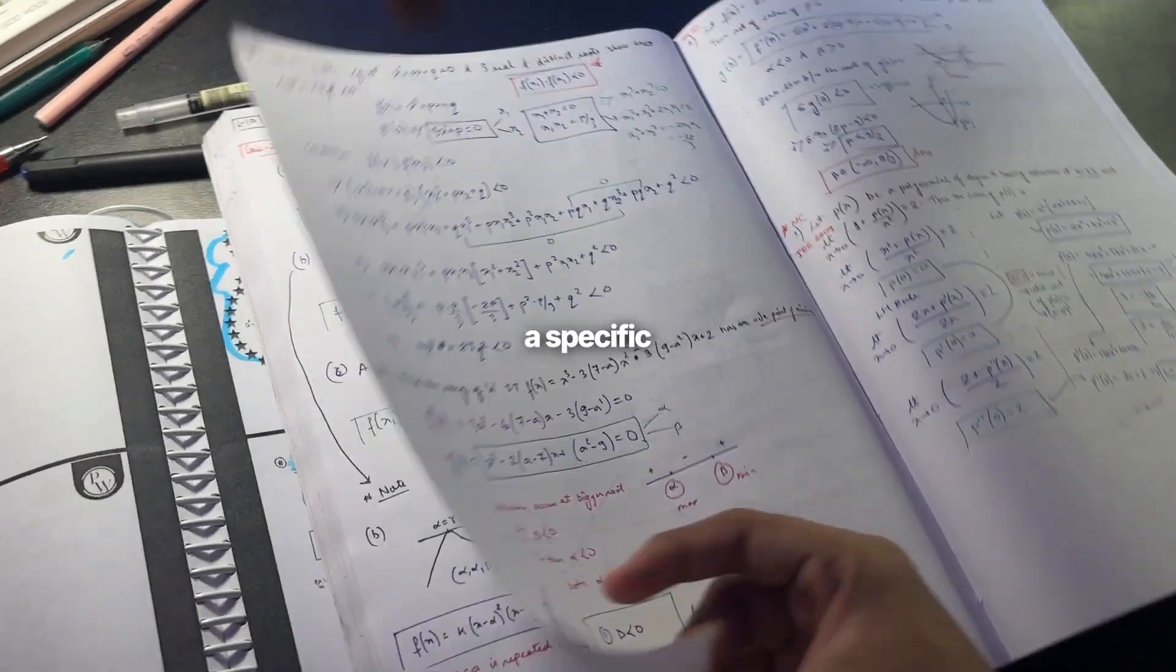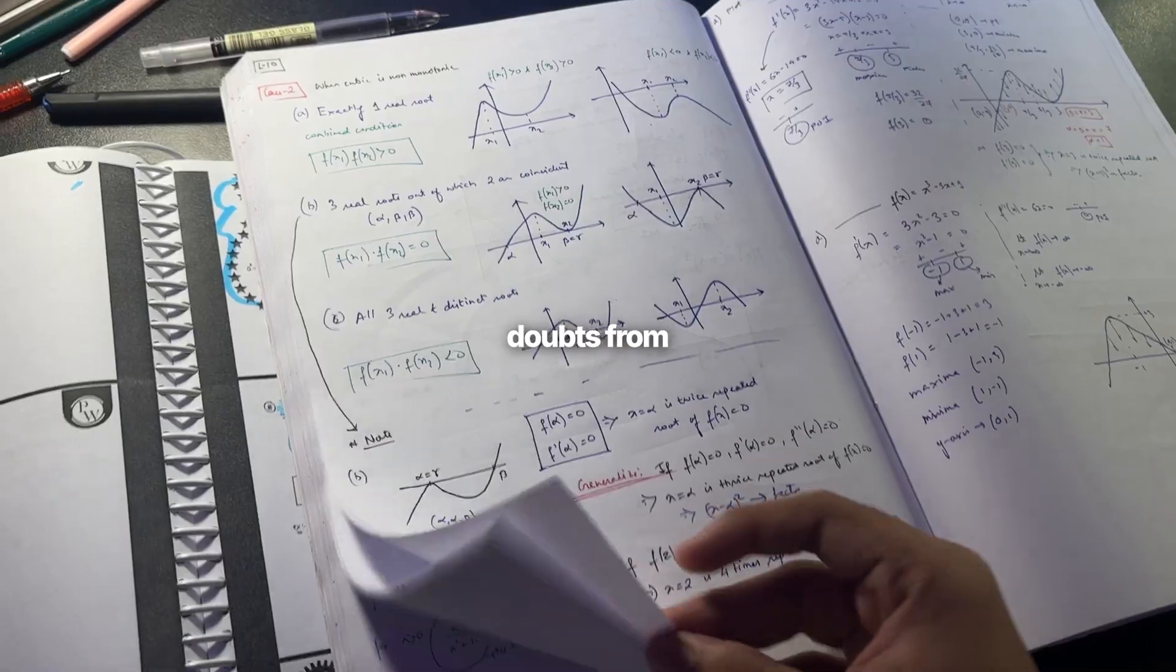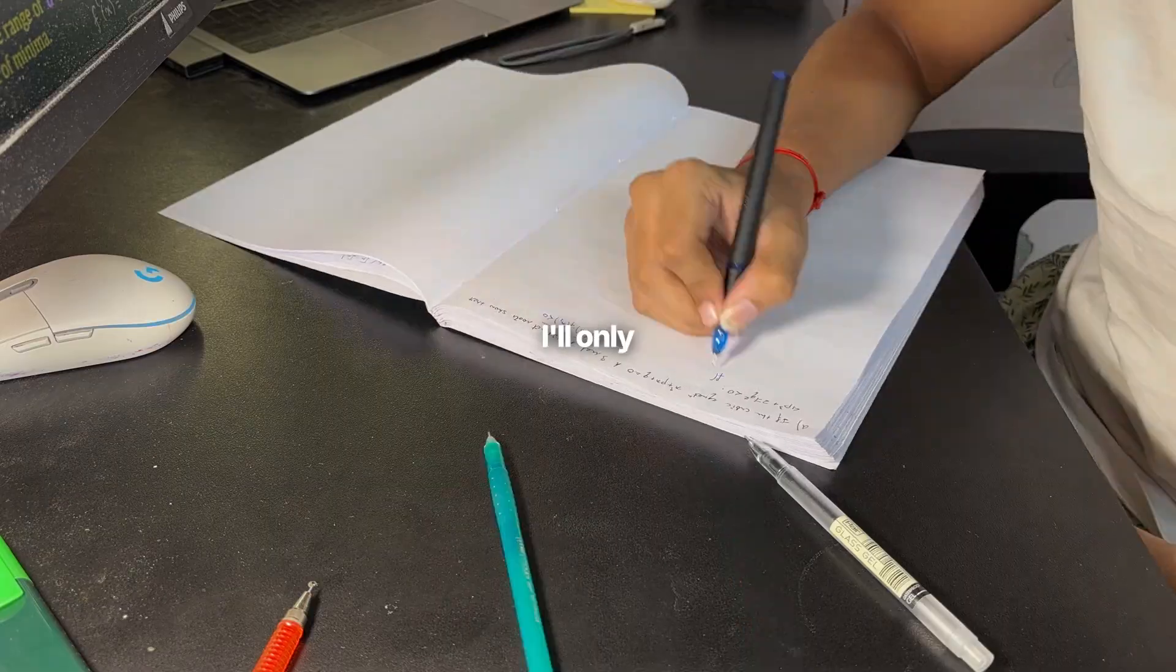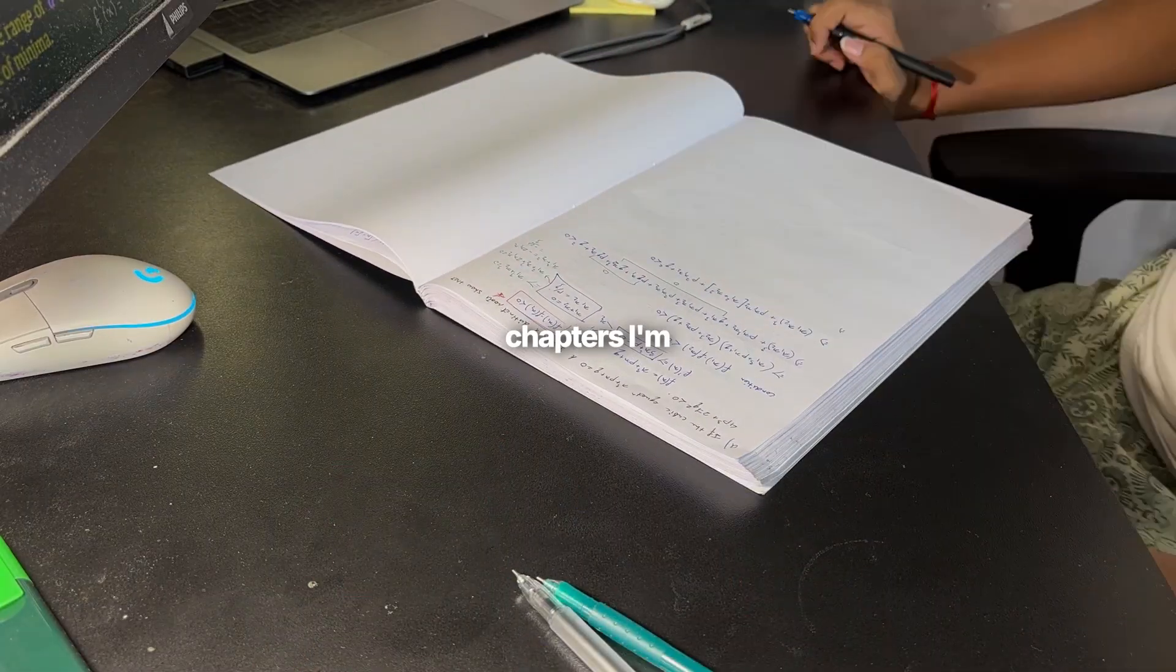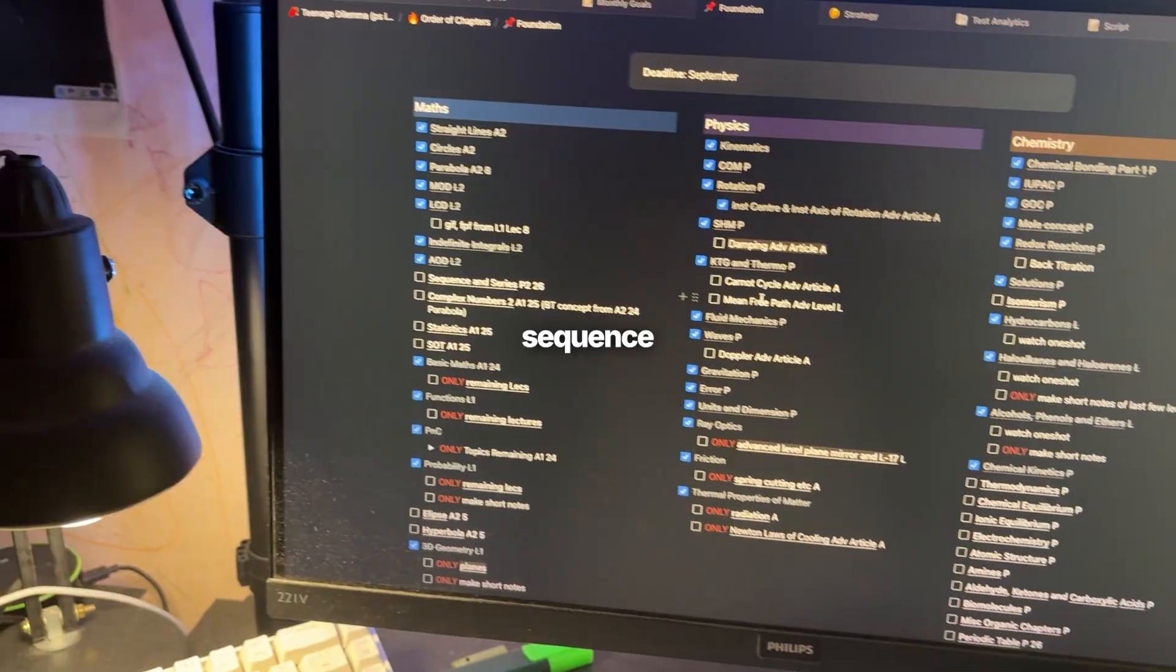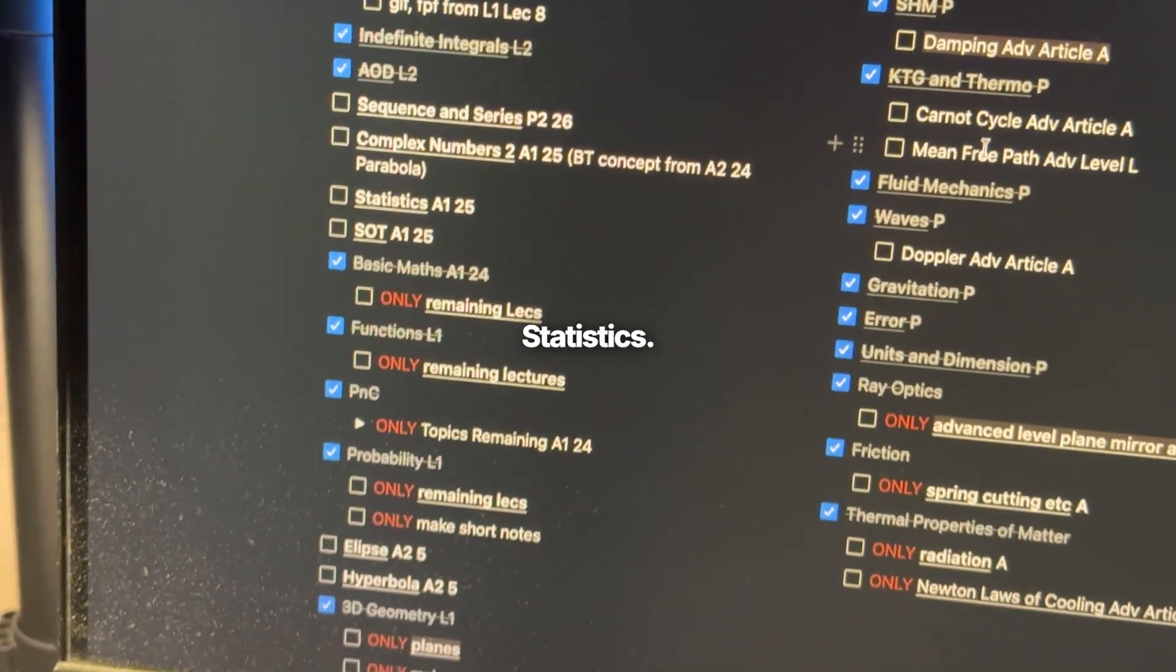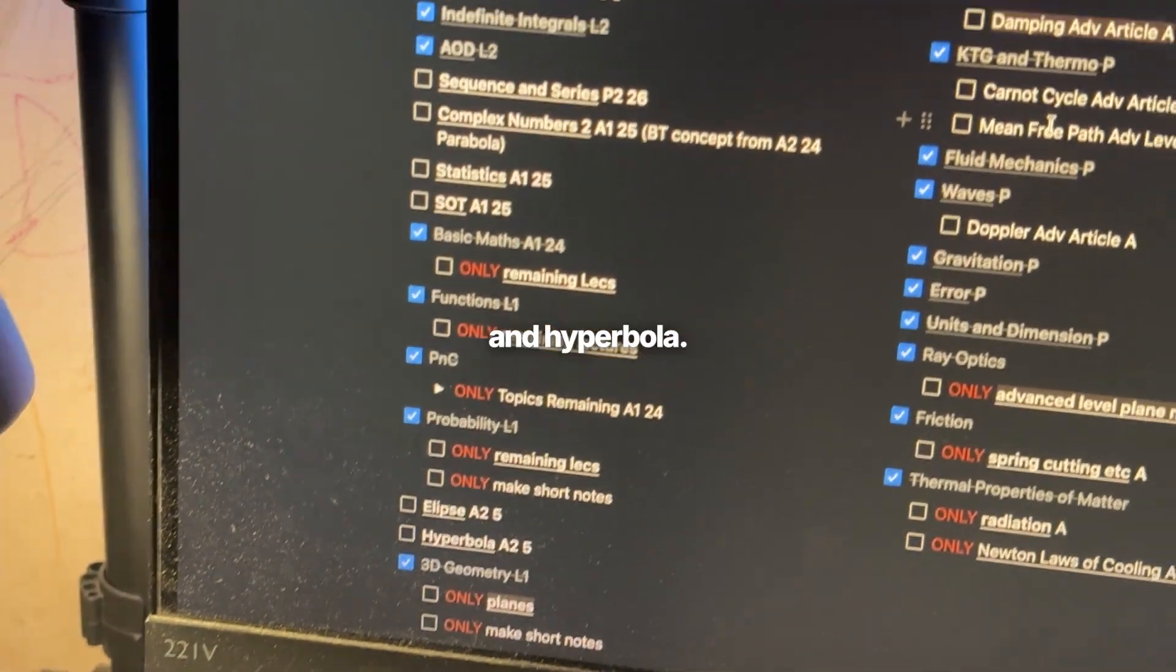Plus, I can always refer to a specific part of the lecture at places I have doubts from within the printed notes. I'll only be making full length notes for the chapters I'm doing for the first time which are sequence and series, complex number part 2, statistics, solution of triangles, ellipse and hyperbola.